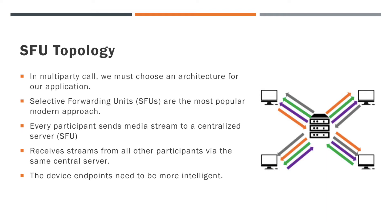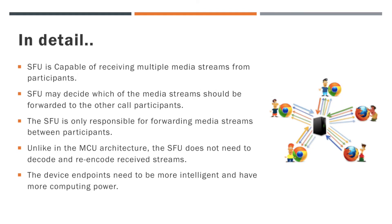Here, the device endpoints need to be more intelligent, because most of the transcoding is done at the device endpoint. An SFU is capable of receiving multiple media streams and deciding which of these streams should be sent to which participants. Unlike in the MCU architecture, the SFU does not need to decode and re-encode received streams, but simply acts as a forwarder of streams between participants.